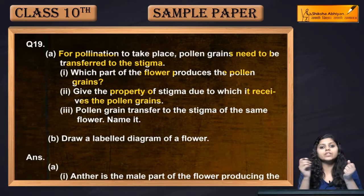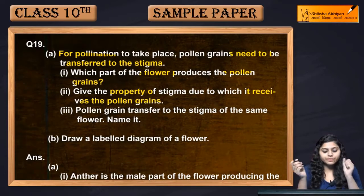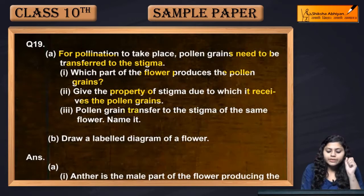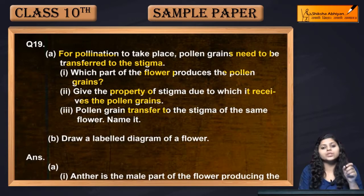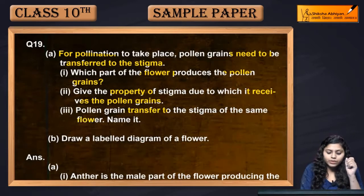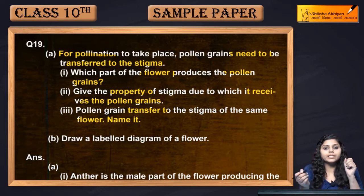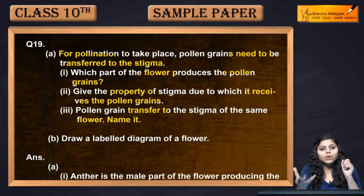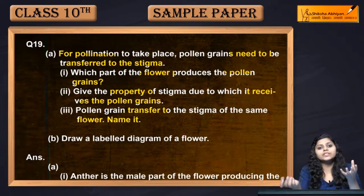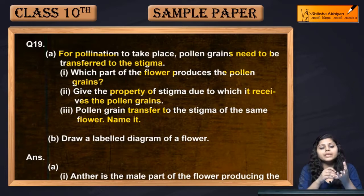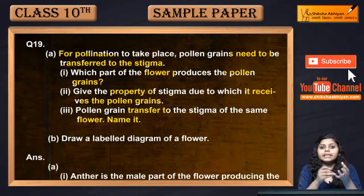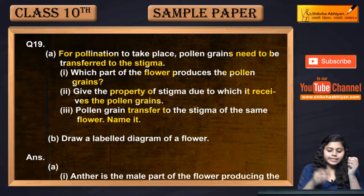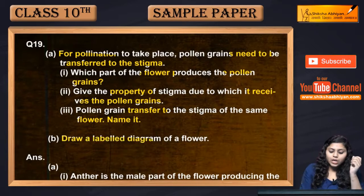Pollen grains are transferred to the stigma of the same flower — name this type of pollination. Ye jab stigma of the same flower mein hi pollen grains aa kar baithe hain ya attach hote hain — that is the second part.